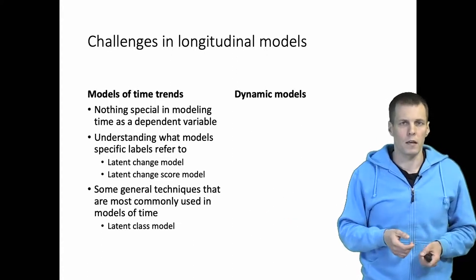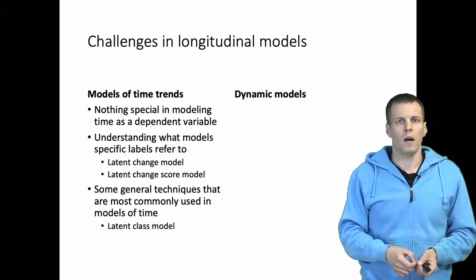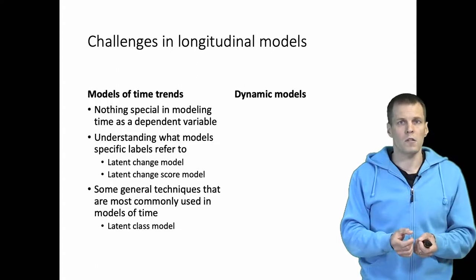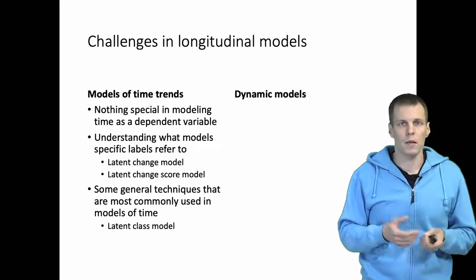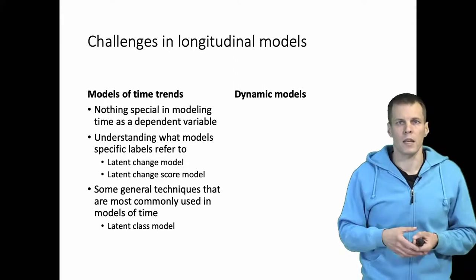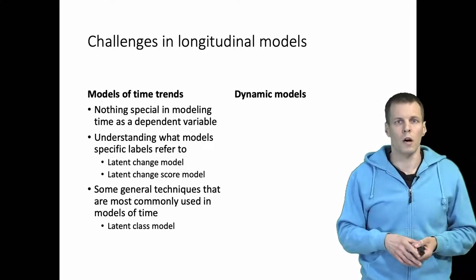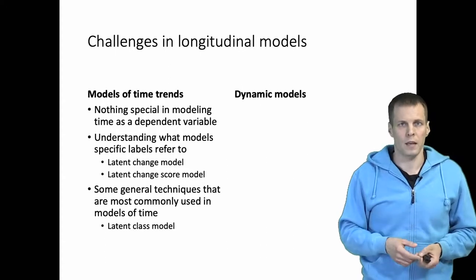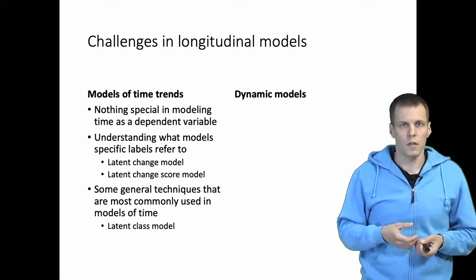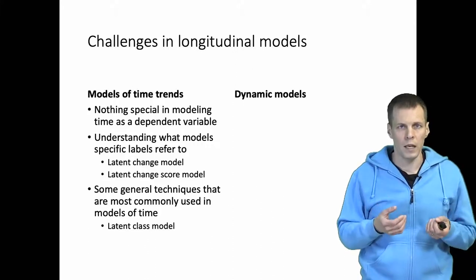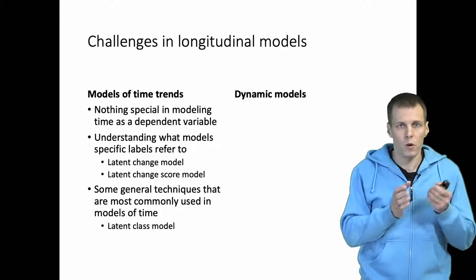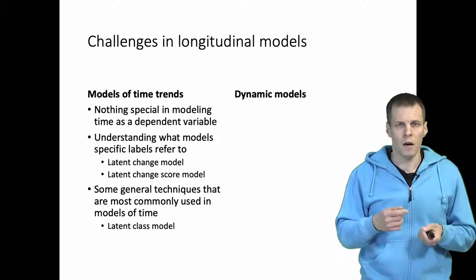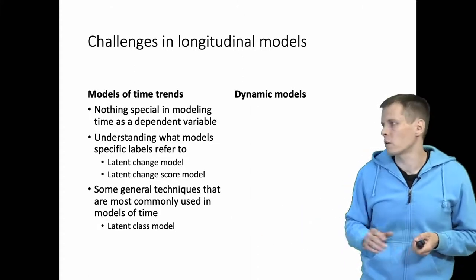So the idea of latent class model is that it's a latent variable model, but at least one of the latent variables in that model is not continuous and normal; rather it's a category. And we could have, for example, different time trends, and we could say that a case follows the first time trend with 70 percent probability and second time trend with 30 percent probability. And our goal of analysis is to discover these time trends from the data and then try to explain which variables explain which of these time trends that we discovered each case follows. So I have another video about latent class models.